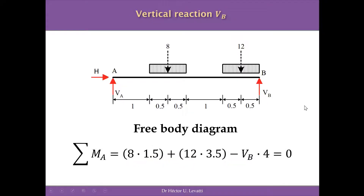The second equation of equilibrium is the summation of moments around point A. We use the equivalent punctual loads of the UDLs: for the 8 kN/m UDL, the equivalent load is 8 kN applied at the middle of the UDL, and for the 12 kN/m UDL over one meter, the equivalent load is 12 kN at the middle of that UDL.